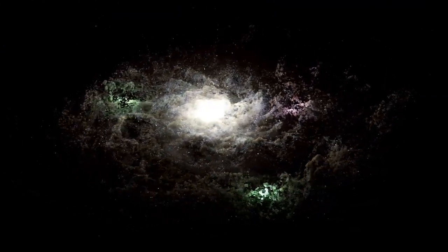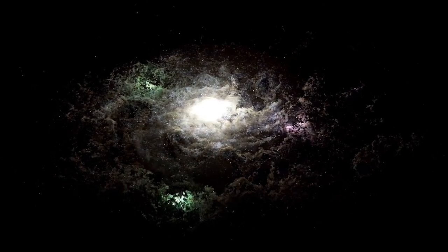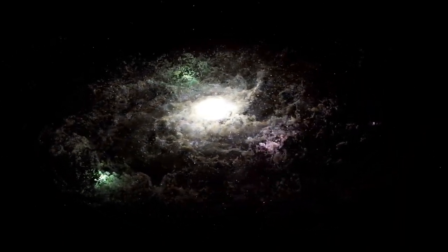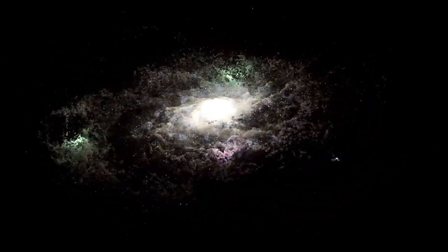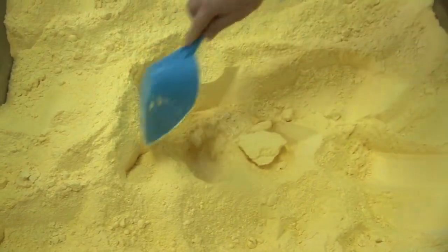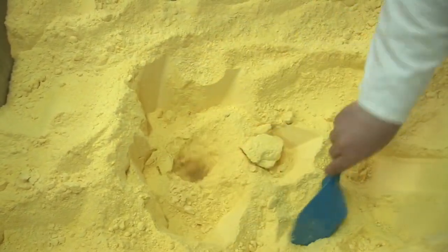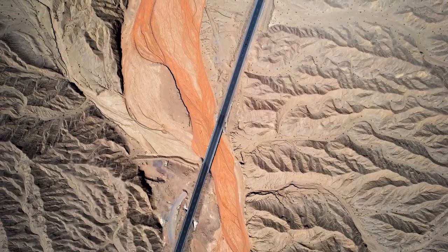Though dark matter cannot be seen directly, its gravitational pull shapes the motion and formation of galaxies. It's this invisible framework that determines where matter collects, forming the enormous galactic walls, superclusters, and filamentary structures we observe.